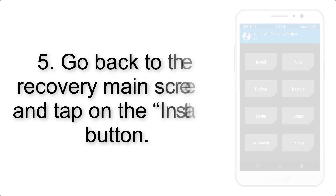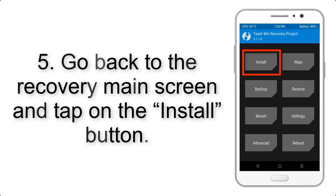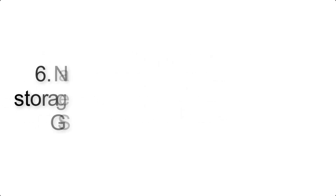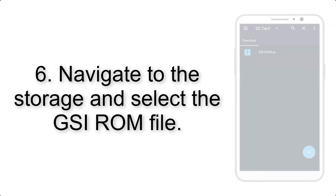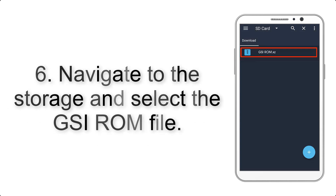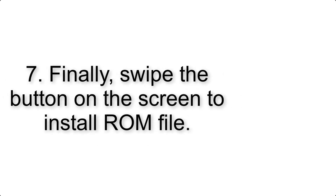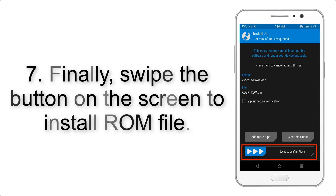Step 4: Swipe the button to wipe the device. Step 5: Go back to the recovery main screen and tap on the Install button. Step 6: Navigate to the storage and select the GSI ROM file.